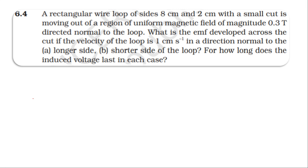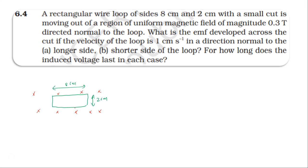For this rectangular loop, the longer side length is 8 centimeter and the shorter side length is 2 centimeter. In the first case, the loop moves with the longer side normal to the direction of motion. The length effective for induced EMF is 8 centimeter. The induced EMF formula is EMF equals BLv.